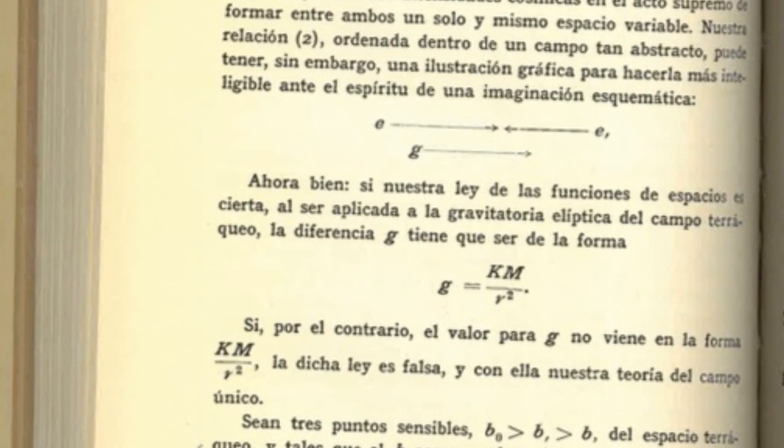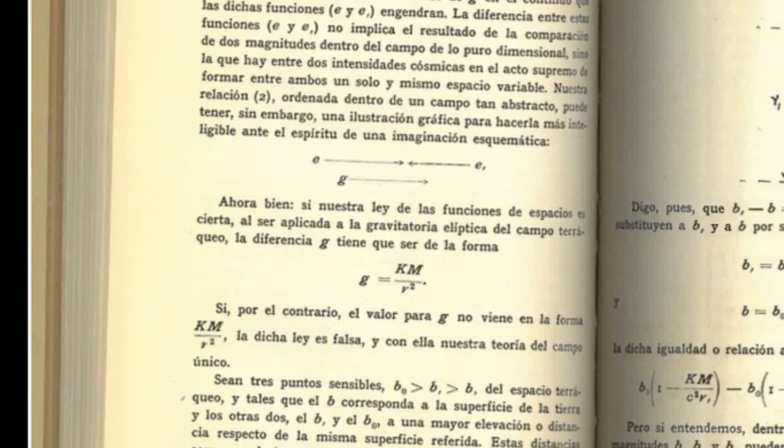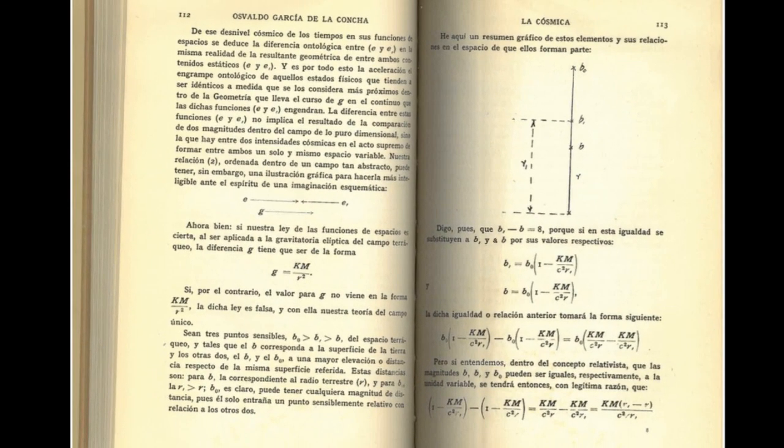Let there be three sensitive points, B subscript zero, of the terrestrial space and such that B corresponds to the surface of the Earth and the other two, the B comma and B subscript zero at a greater elevation or distance with respect to the same surface referred to.